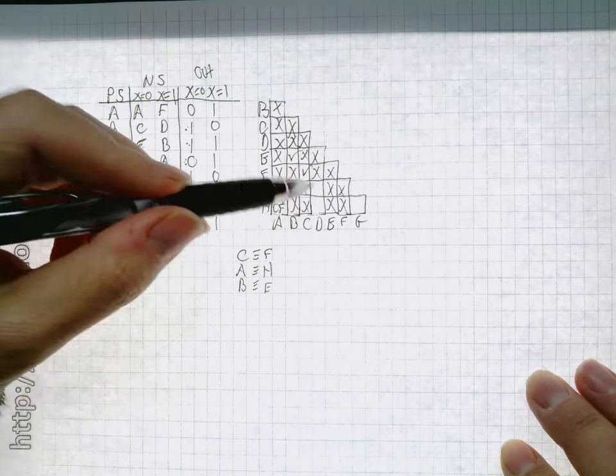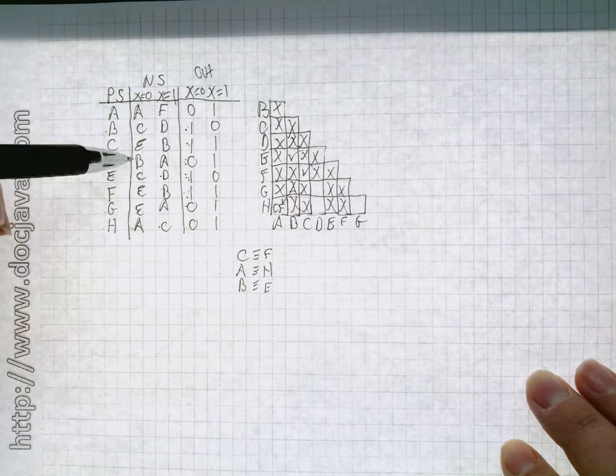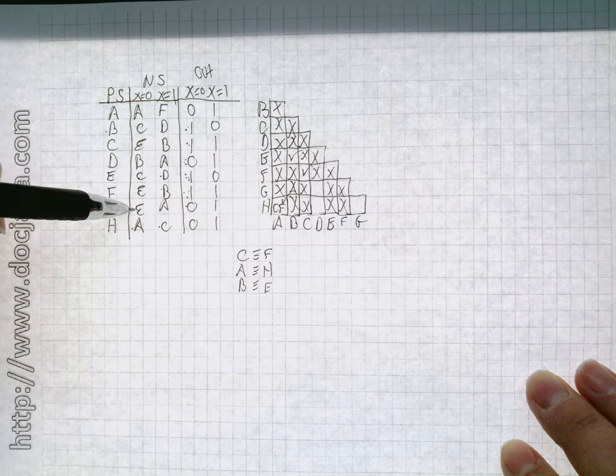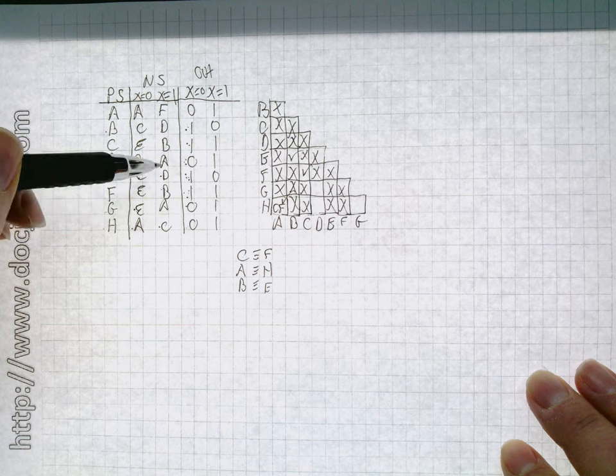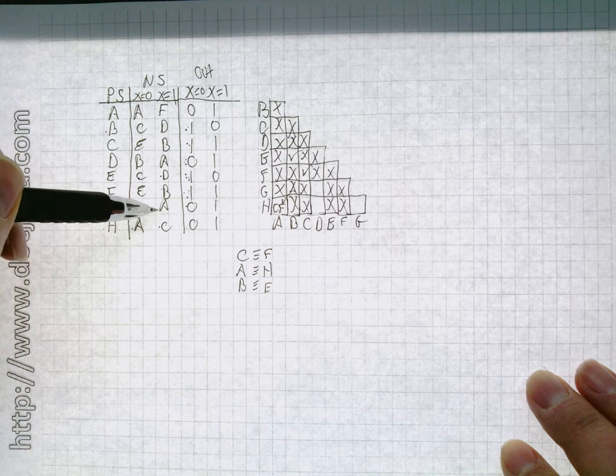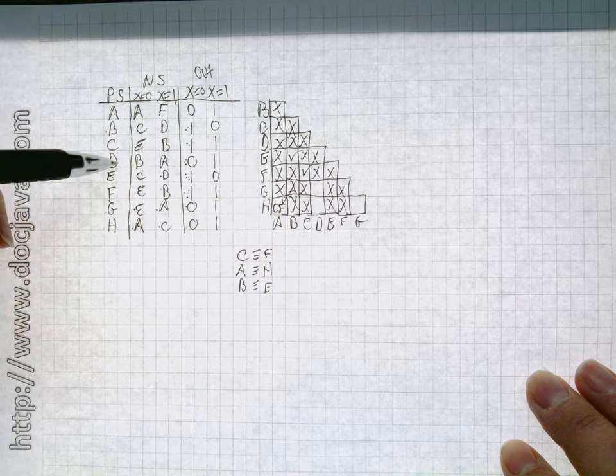What about D and G? If we look at D and G, we have B and E. B and E are equal, we already have that, and also we look at A and A, yes A and A are equal, so it looks like D equals G.